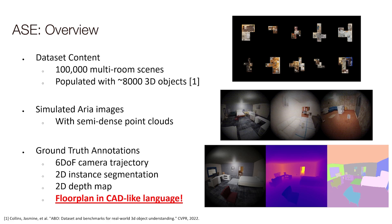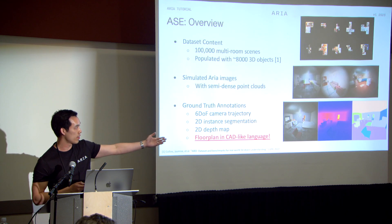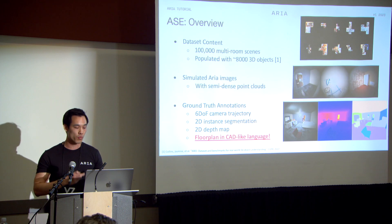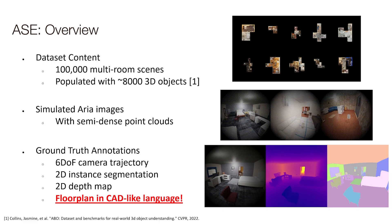We also provide ground truth annotations. Since it's a simulated dataset, we have the ground truth six-DoF poses of the trajectory to facilitate pose estimation and pose regression research. We've got 2D instance segmentations to facilitate segmentation research, 2D depth maps so you can study video depth estimation or monocular depth estimation, and we also have the floor plan in a CAD-like language. Let's take a moment and dive into that.